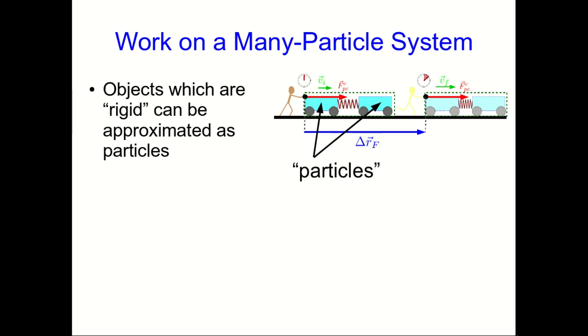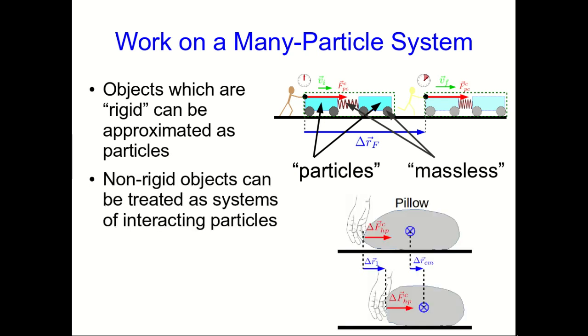And what about the wheels which are rotating internally to the system? Well, as long as they're light, we can treat them as massless. However, they're still going to have internal energy. And that's going to be captured in the fact that we think of these particles now as interacting. There's internal energy in the system. So non-rigid objects can be treated as systems of interacting particles.